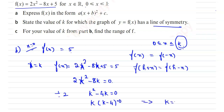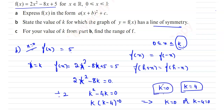So k(k minus 4) equal to 0, which implies k equal to 0 or k equal to 4. We have two roots: k equal to 0 and k equal to 4. k equal to 0 is not possible because the domain has no meaning. So we take k equal to 4, for which the graph y equal to f(x) has a line of symmetry.